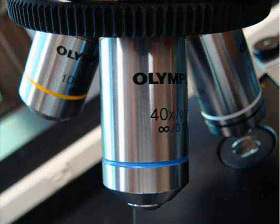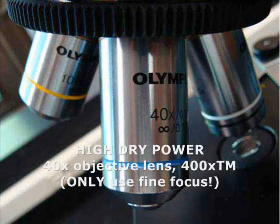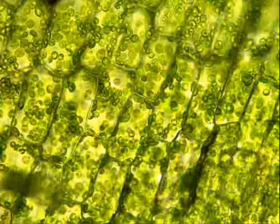Once the specimen is clearly in focus at low power—that yellow banded lens—I can switch the objective to the high dry power. That's the blue banded lens and it will magnify my specimen a total of 400 times actual size.